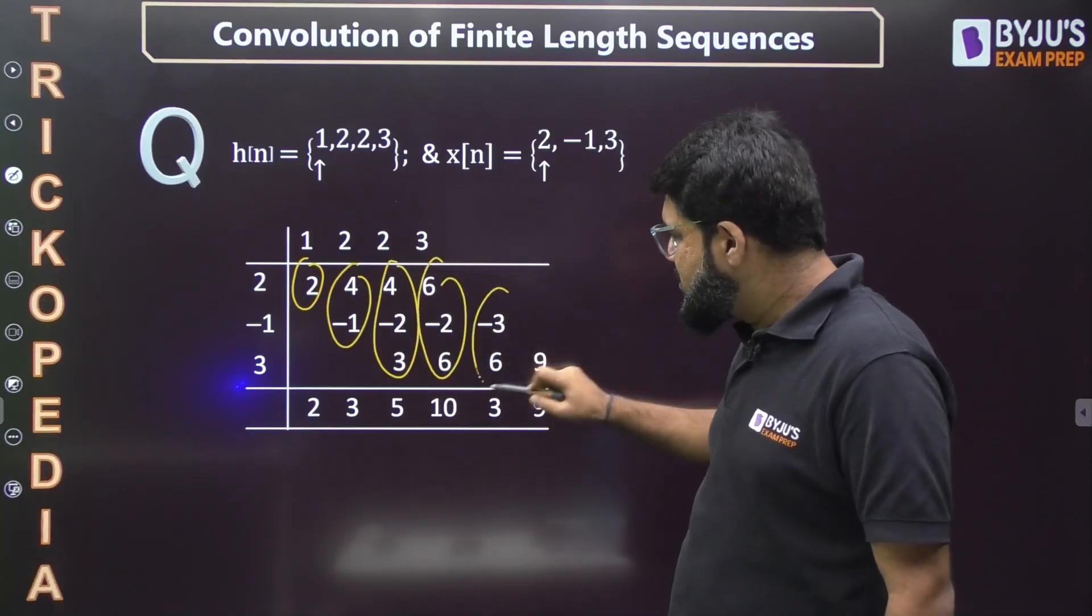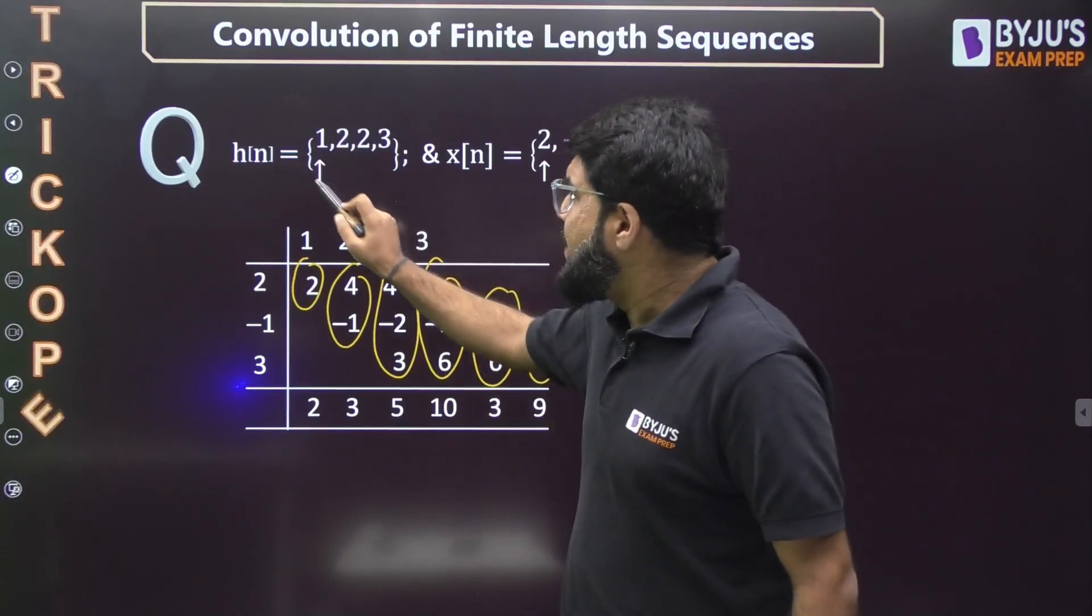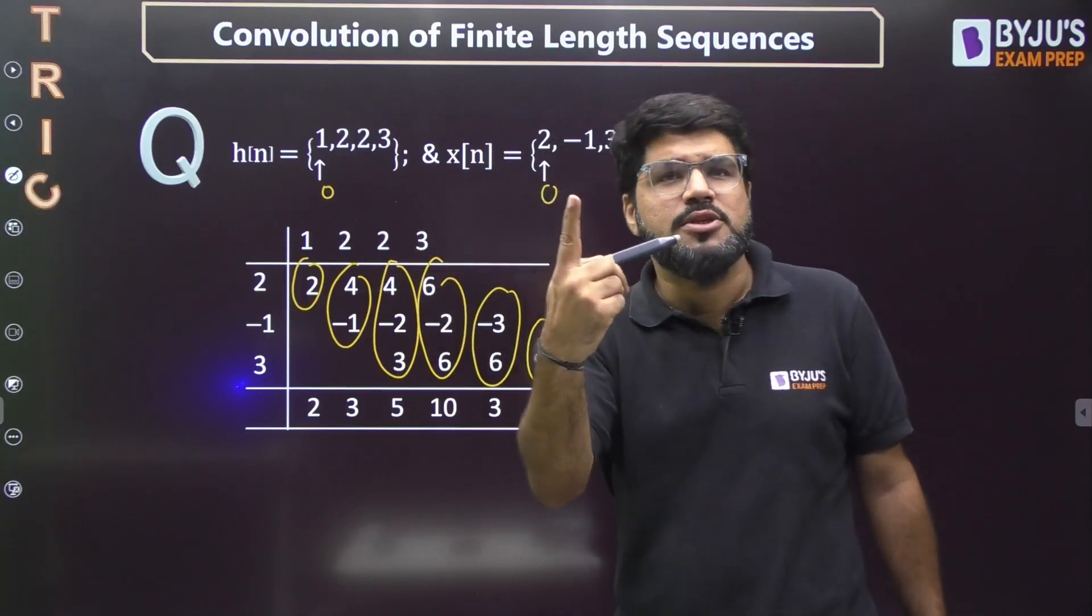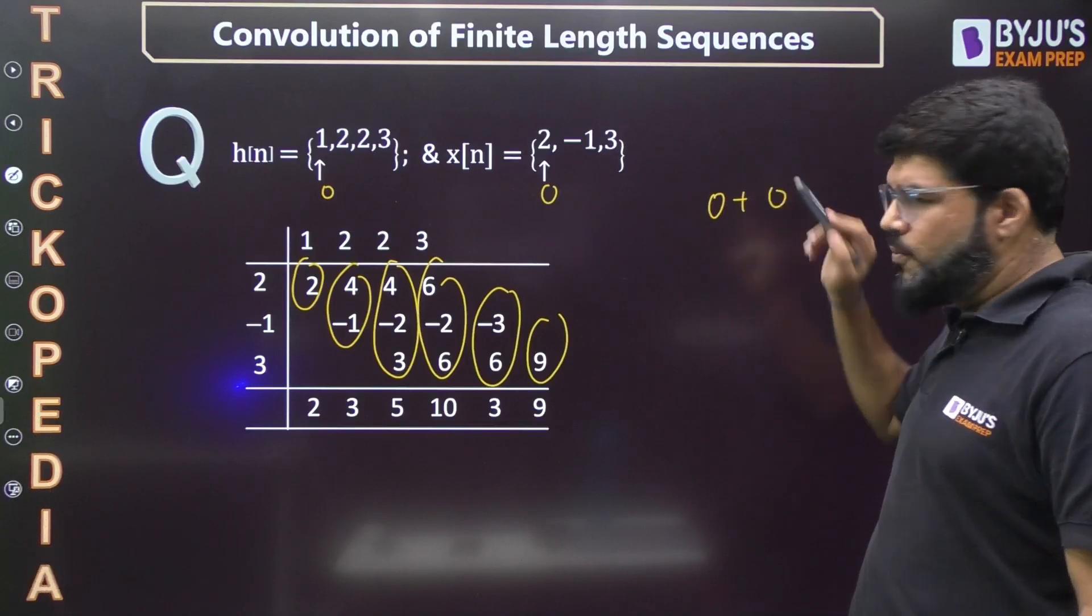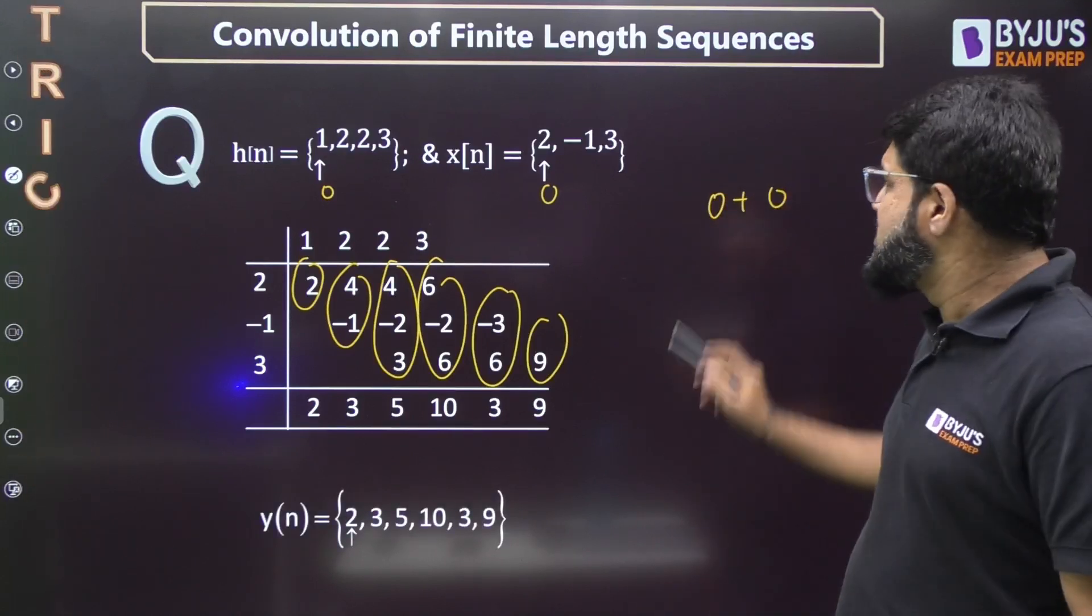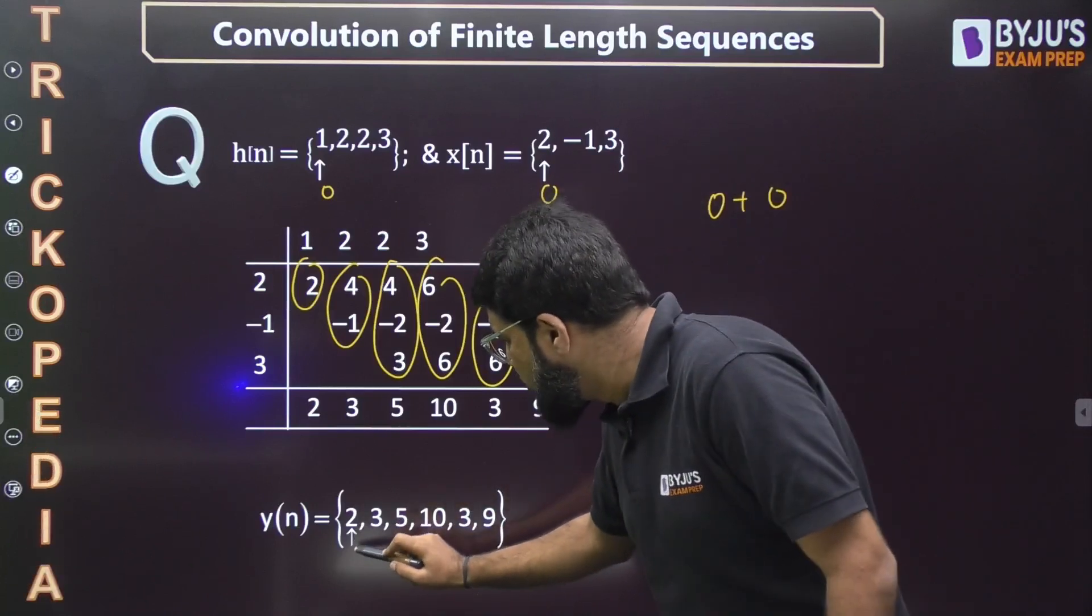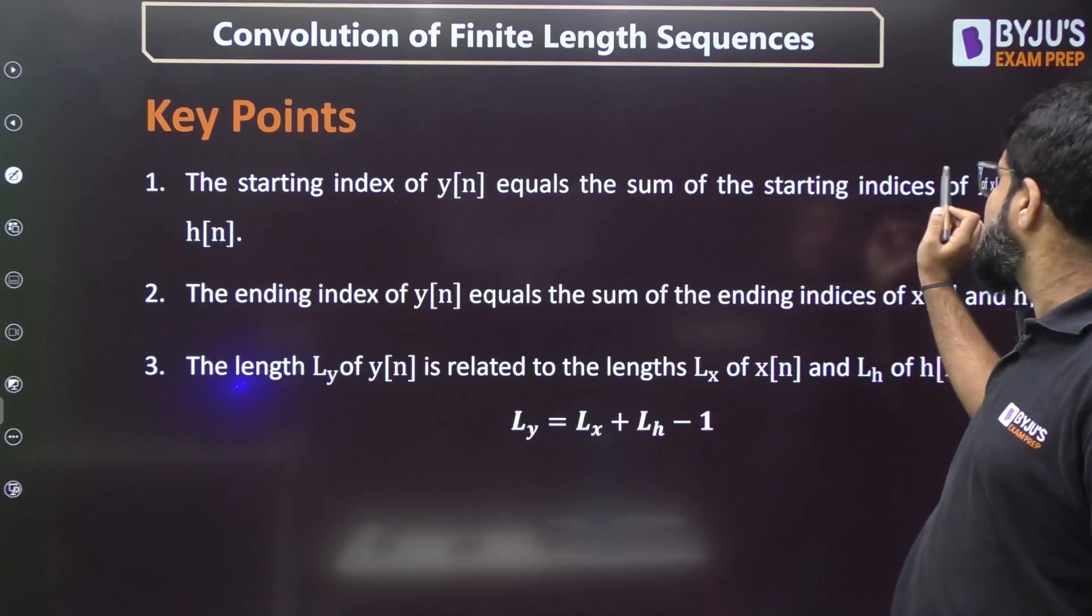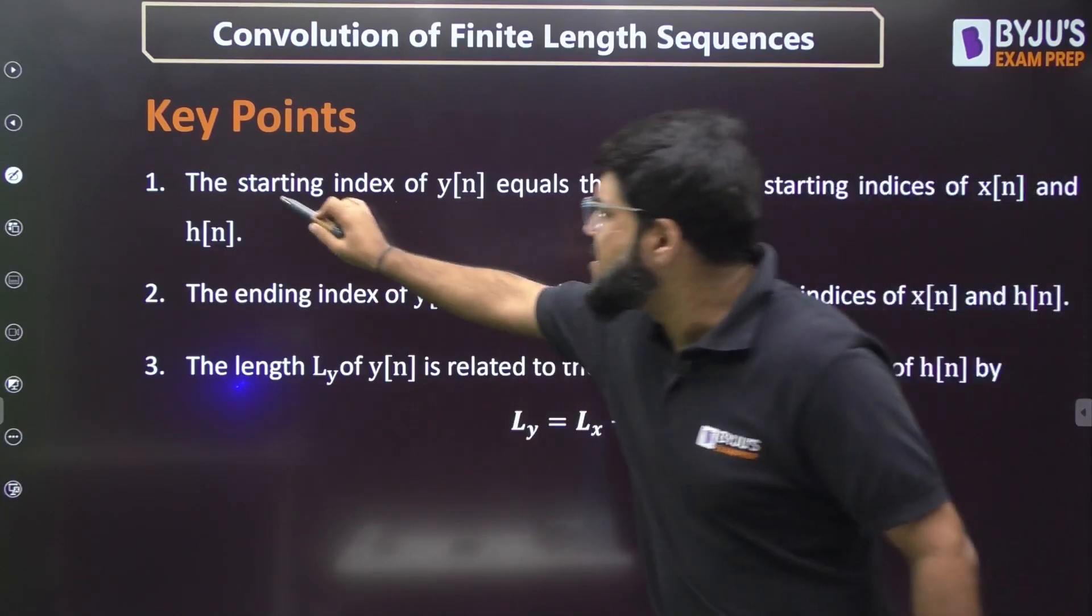If you keep doing sum by column, this is 2, then this becomes 3, this adds to 5, this becomes 10, this is 3, and this is 9. Now the origin: the sample h[n] starts from zero, the sample x[n] also starts from zero because arrow means origin. Output will also start from zero because sum of starting indexes are added.